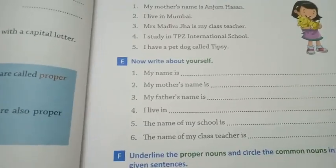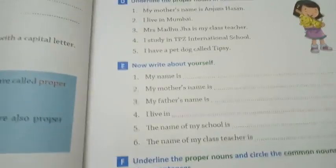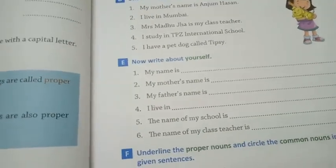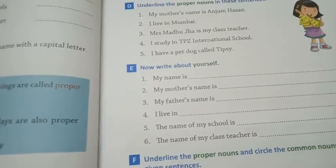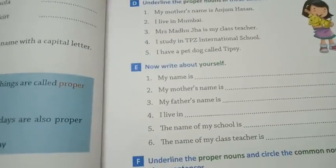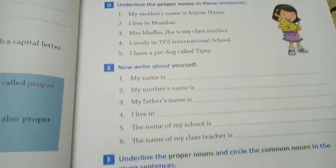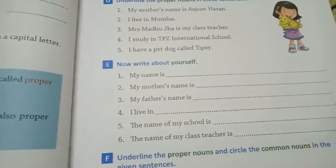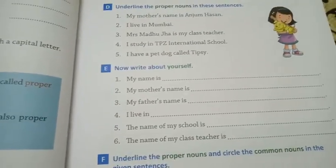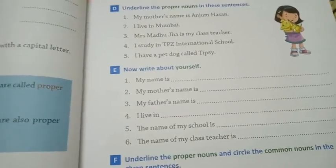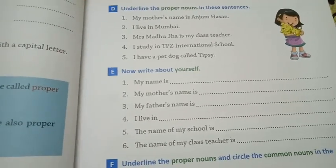In our previous video we have already discussed about types of nouns — common noun and proper noun. Common noun is a general name, and proper noun is a special name — a special name of a person, place, animal, or thing. These are called proper nouns. And proper nouns always begin with a capital letter.